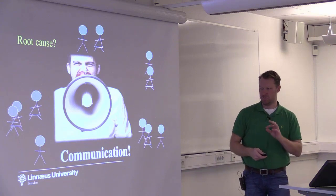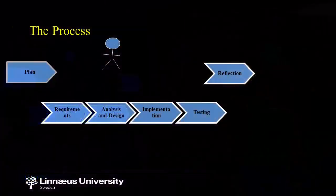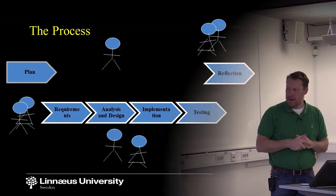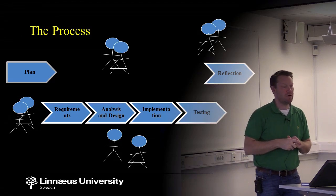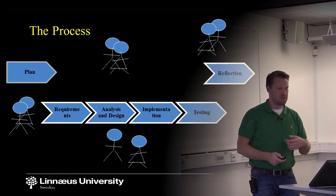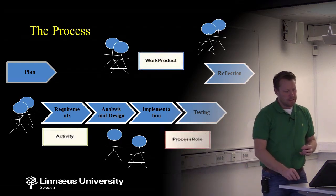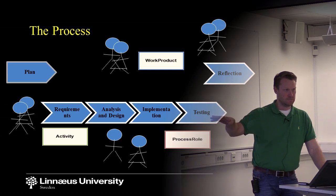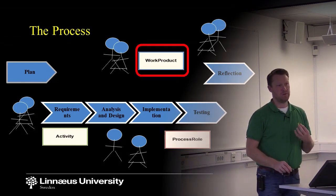Communication was the root cause here. And you remember this process model that we outlined with the different people involved in the process. We have a couple of activities and a fairly large number of stakeholders performing activities to drive the project forward towards a solution. So activities, roles, and work products were the process components — and this is where we will find our models.